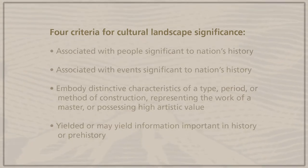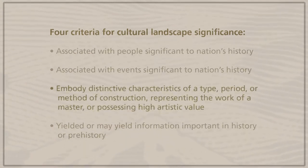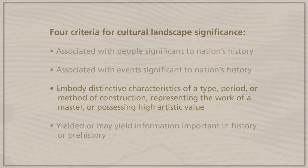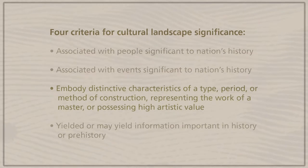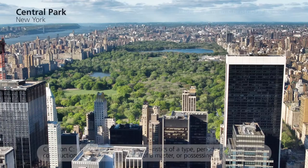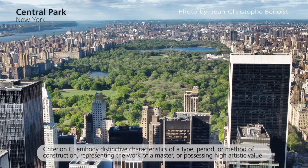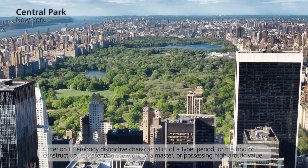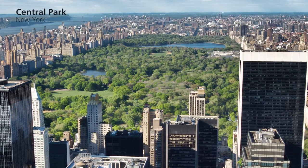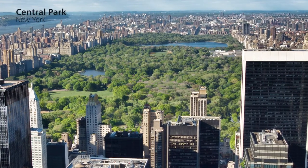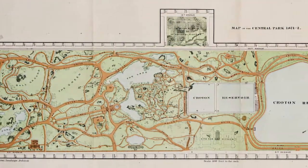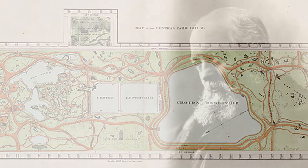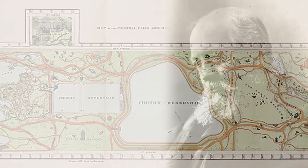Third, we look at those properties that have distinctive characteristics of a type, period, or method of construction, or that represent the work of a master, or possess high artistic value. Oftentimes this is thought of in regards to historic structures, but it applies to landscapes as well. This is Central Park in New York — not a national park — but the work of a master, Frederick Law Olmsted, the father of American landscape architecture, who designed and oversaw the construction of this park.